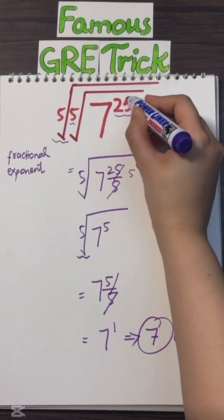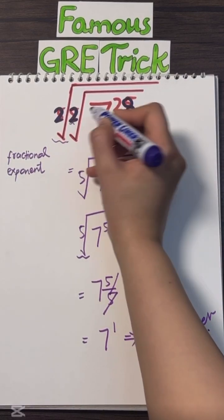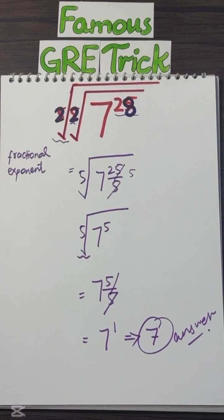So, if I change this power from 25 to 28, and also change the outer root to 2 and 2, then what will be the answer? Tell me in the comments. Well, let's see.